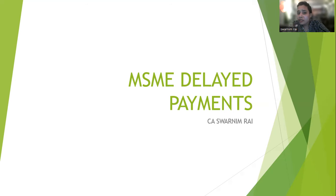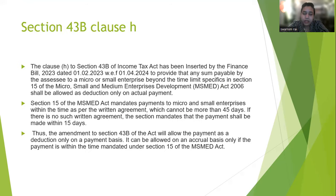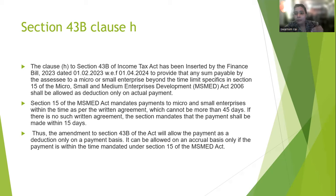In Budget 2023, Section 43B has a new clause added — clause H — which is related to MSME. If you have delayed payments, Section 43B clause H is added and this will affect the current financial year. So be careful: if you have a client who has MSME creditors, act quickly so there is no disallowance. If you have a business with creditors, be careful.